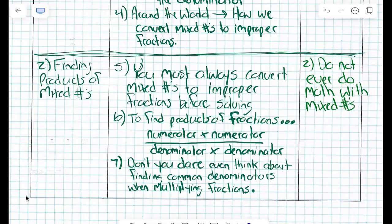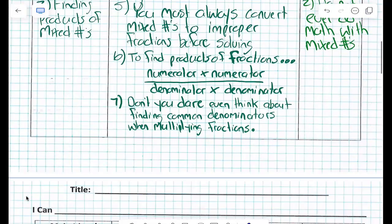When you're multiplying fractions, you must always multiply numerator by numerator and denominator by denominator. Can you do math with mixed numbers? No. You must always convert mixed numbers into improper fractions.